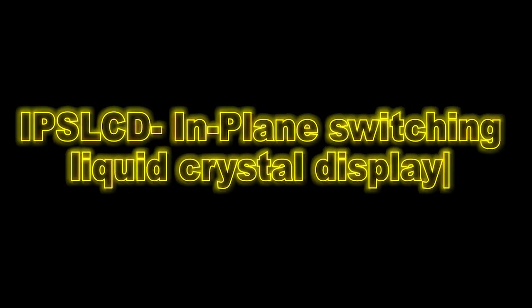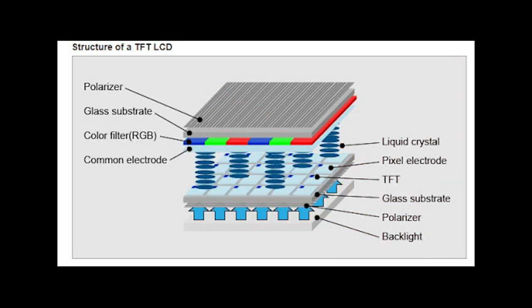Now let's start with the IPS LCD display. The full form of this LCD display is IPS — In-Plane Switching Liquid Crystal Display. This display works very well. It has a glass layer, and inside that glass layer there is a sandwich of liquid crystals with two different layers. There are two light directions involved in how it works.